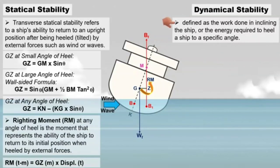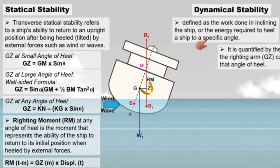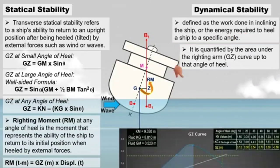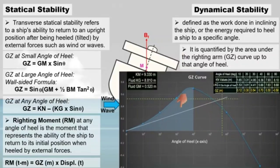Dynamical stability is defined as the work done in inclining the ship, or the energy required to heel a ship to a specific angle. It is quantified by the area under the righting arm, known as the GZ curve, up to that angle of heel.